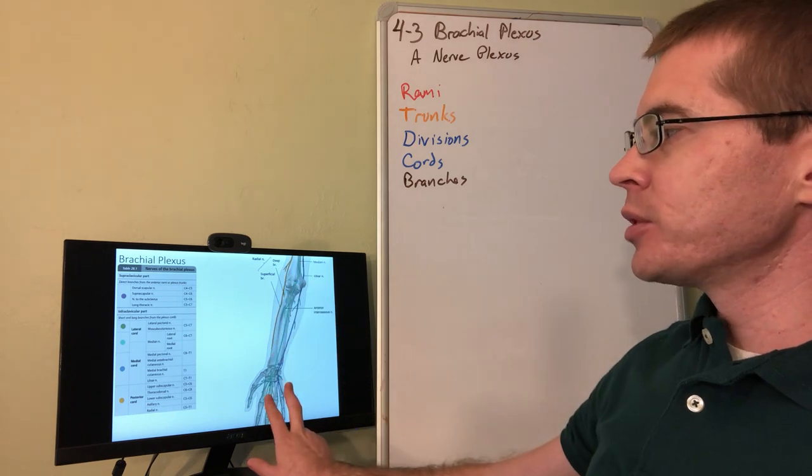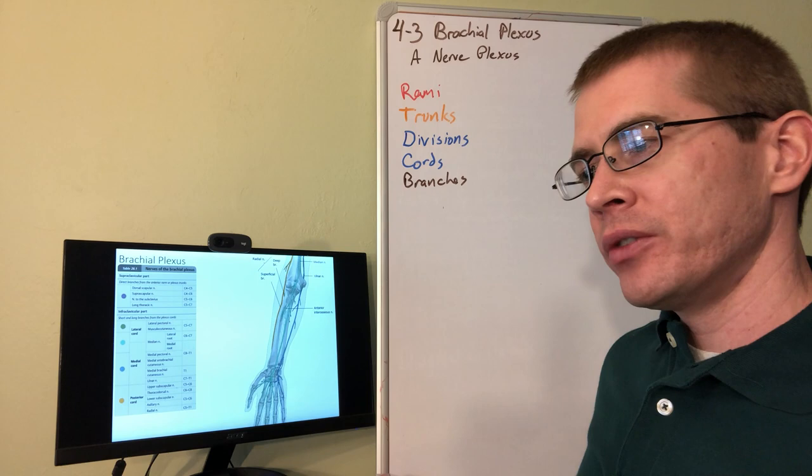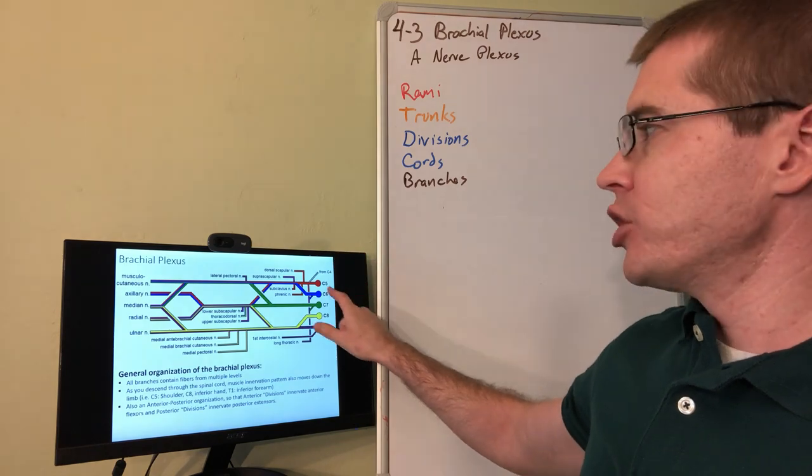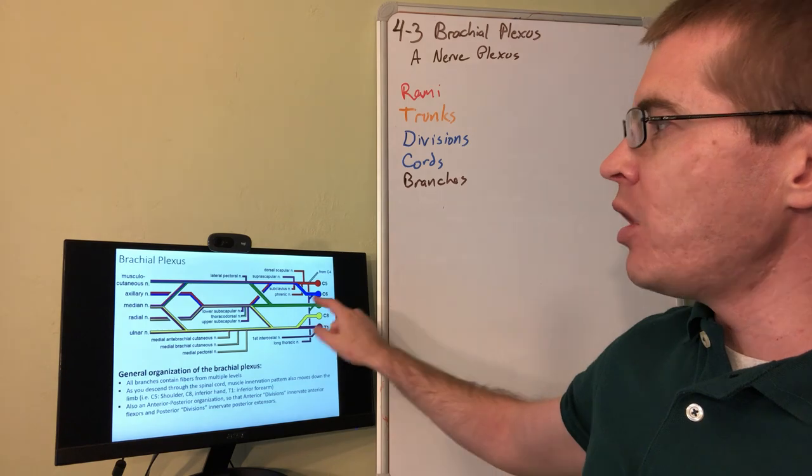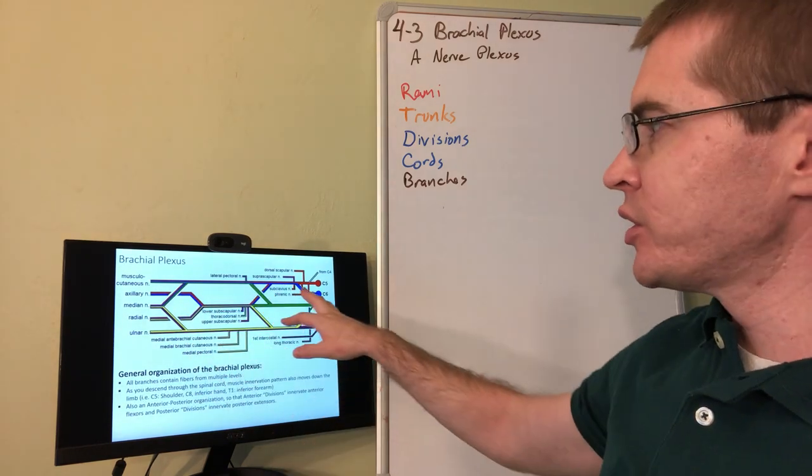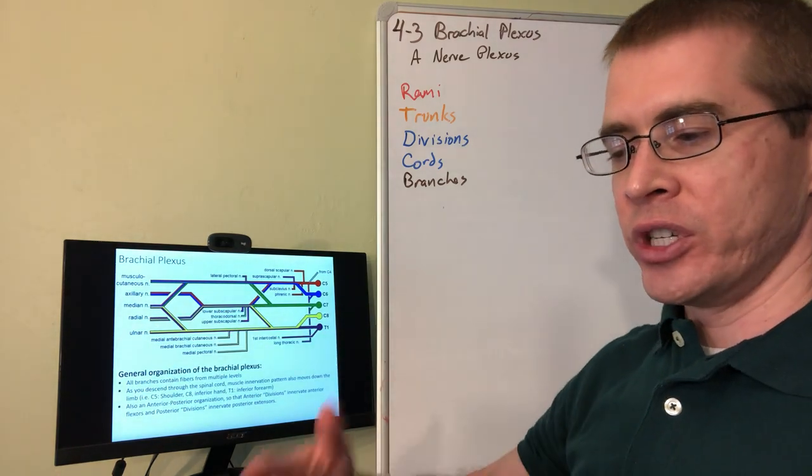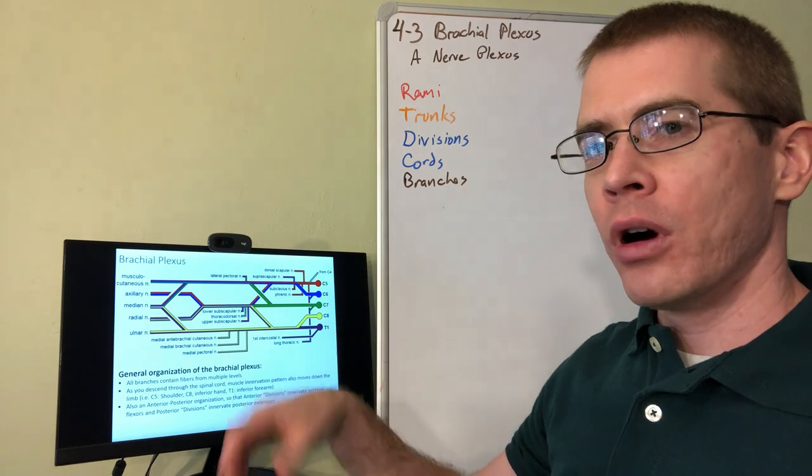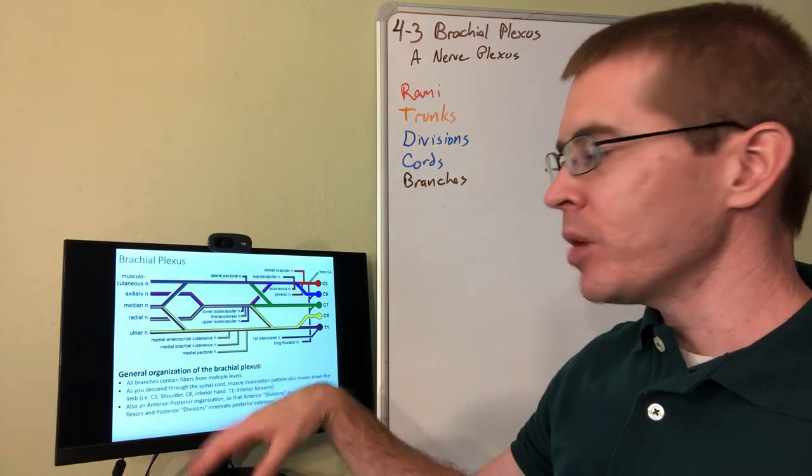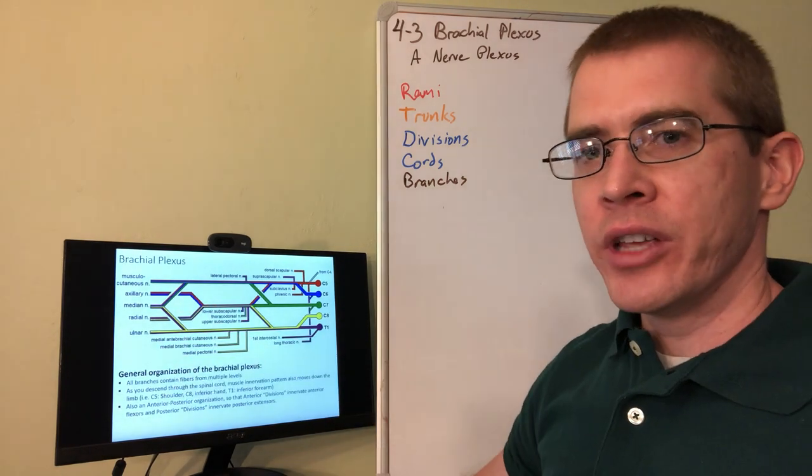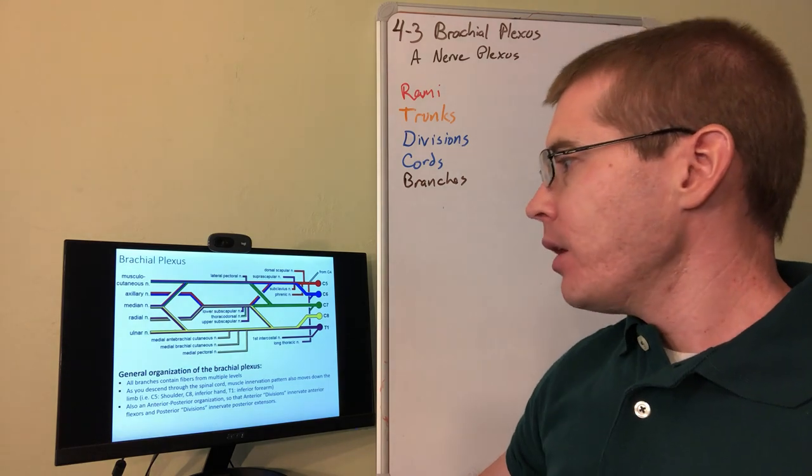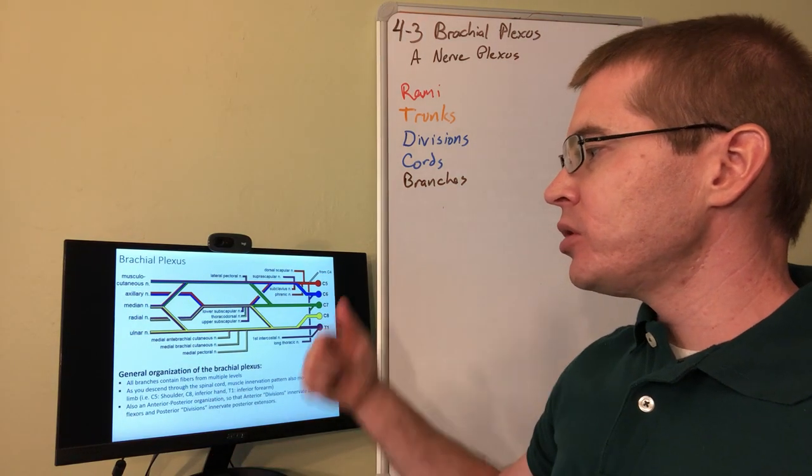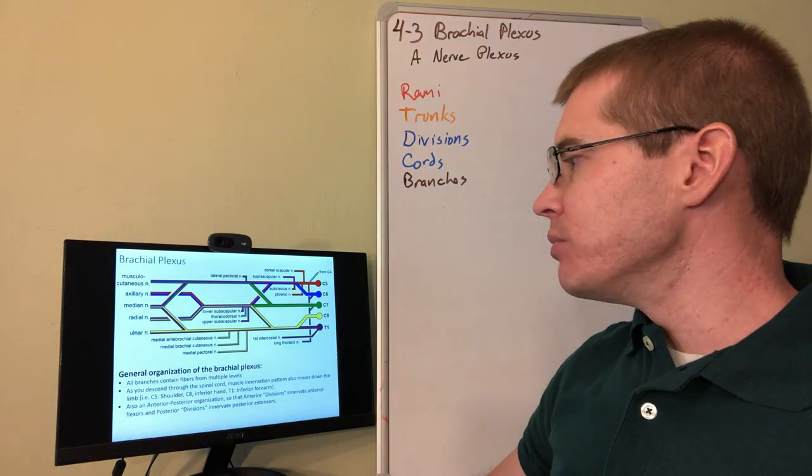Now looking at how those terminal branches travel into the arm and form the muscle innervations and the dermatomes of the arm. So this color drawing here shows you the spinal cord segment from which all of these fibers are originating and what trunks and divisions and cords they travel through to get to the terminal branches. So this is something that you should probably spend some time on and potentially draw and rehearse this information because you'll need to know what's innervating what, where the dermatome is coming from and going to. A rule of thumb if you blank out is that as you descend through the spinal cord, muscle and dermatome innervation patterns move down the limb.